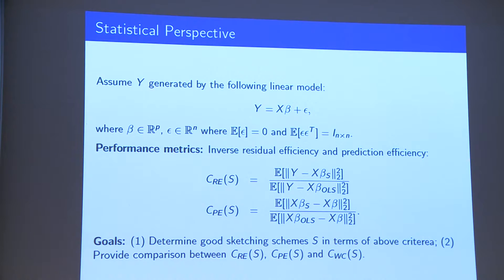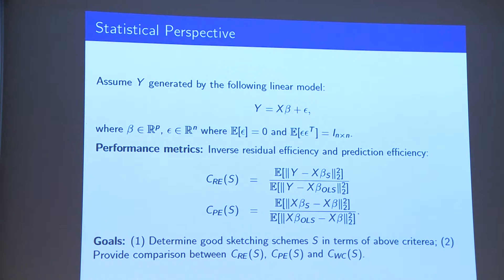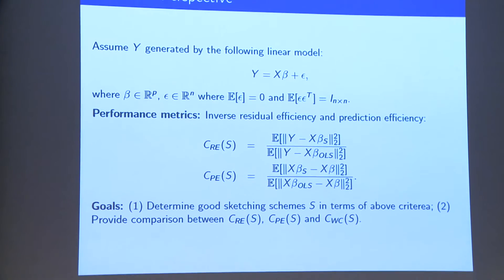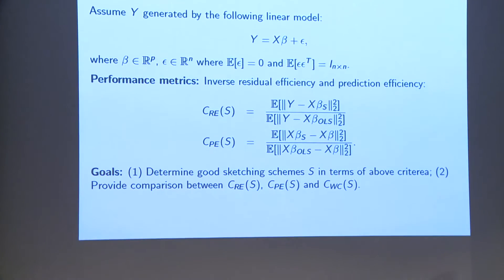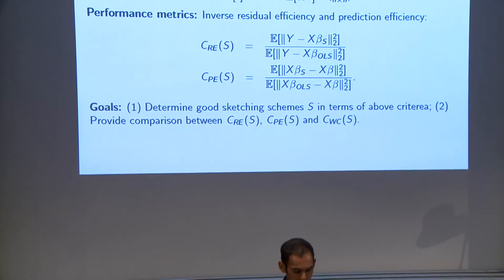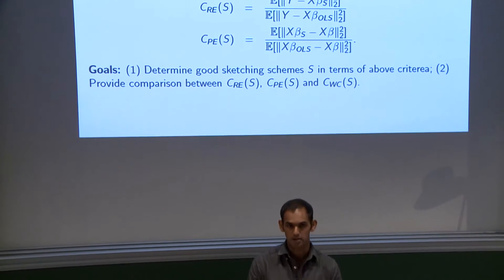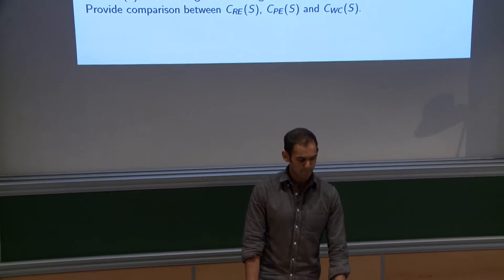We'll see there's going to be a very important distinction between these two metrics. Ideally you want to determine good sketching schemes that do well in terms of all three criteria. These two are really statistical types of criteria, and the one on the previous slide was an algorithmic or computational criterion.